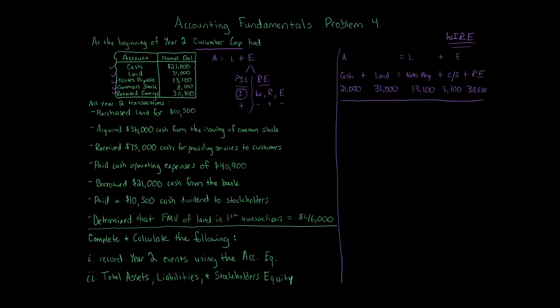Transaction 1: Purchased land for $10,500 — it's implied to be cash since we're not told otherwise. Going from left to right: Cash goes down by $10,500, and Land goes up by $10,500. That transaction is done.